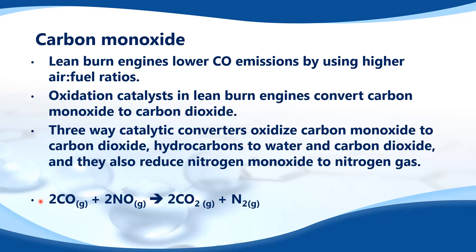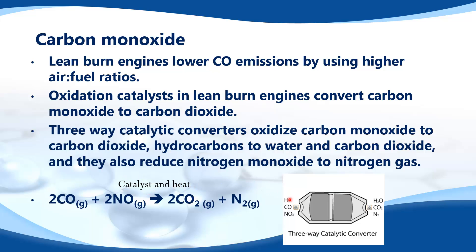Here we have the equation for the chemical reaction that occurs in a catalytic converter. Carbon monoxide and nitrogen monoxide react together to form carbon dioxide and nitrogen gas, and this occurs in the presence of a catalyst and heat. Here we have a diagram of a three-way catalytic converter. HC is hydrocarbon, CO is carbon monoxide, and we have the oxides of nitrogen entering the catalytic converter. The outputs are water, carbon dioxide, and nitrogen gas.